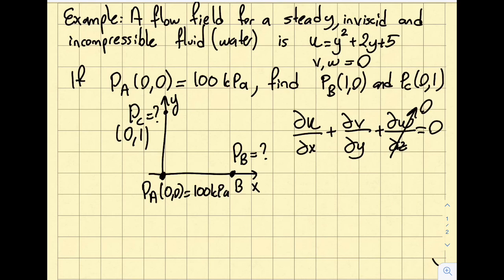So this one is going to be 0 because w is 0, similar logic v is 0, and this time around, del del x of y squared plus 2y plus 5, is it really equal to 0? And you can see here that there's no x in this equation, so yes, this will be satisfied and my conservation of mass is satisfied.